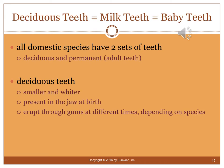All domestic species have two sets of teeth: deciduous (baby) teeth and permanent adult teeth. Deciduous teeth are smaller, whiter, and often hollow. They are present in the jaw at birth and erupt through the gums at different times depending on species. Cats and dogs should have a full set of adult teeth by about six months. In smaller breeds like Chihuahuas and Yorkies, deciduous teeth are often removed during spay/neuter if still present, as retained deciduous teeth alongside adult teeth can cause significant dental damage.